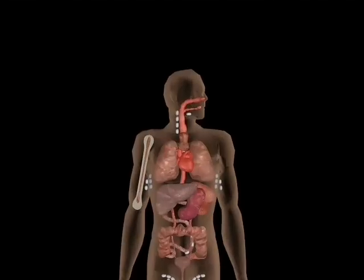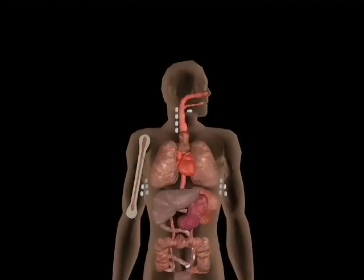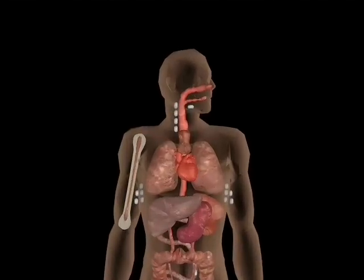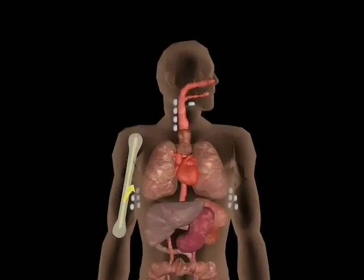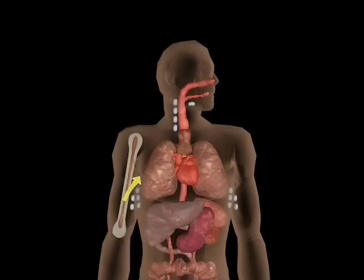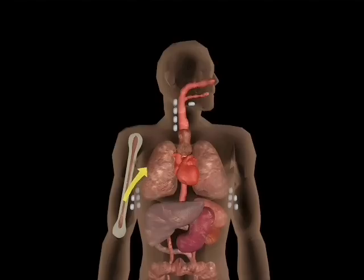Immature lymphocytes formed in the bone marrow are released into the circulatory system. Some of these, which are to become T-cells, must first undergo selection based on specificity and degree of response to antigens. This occurs within the thymus gland, located in the cardiothoracic cavity above the heart.